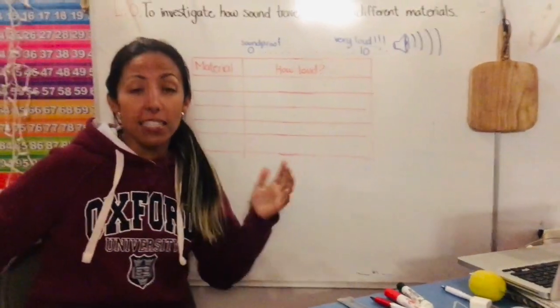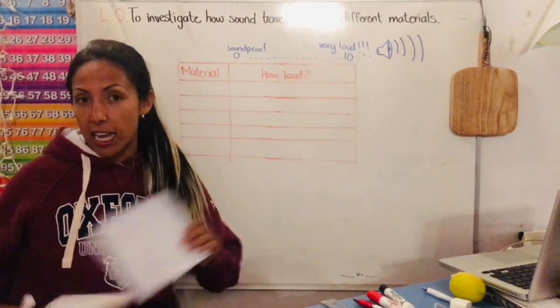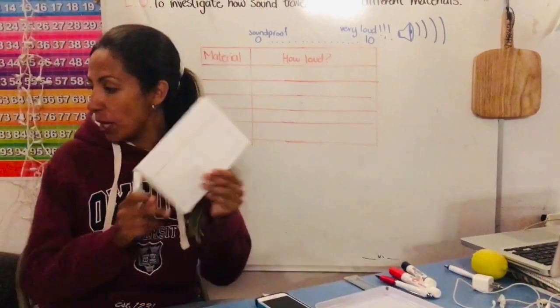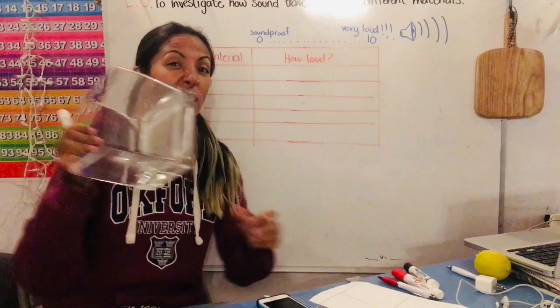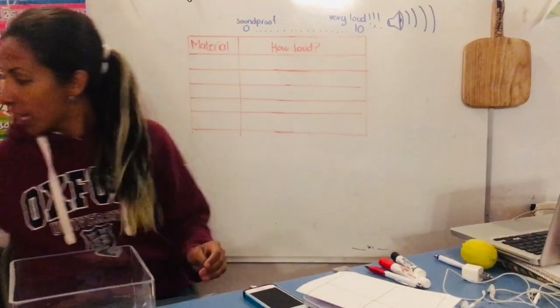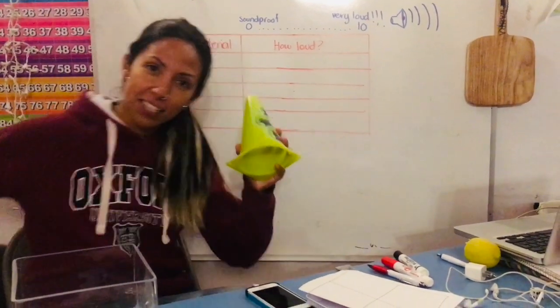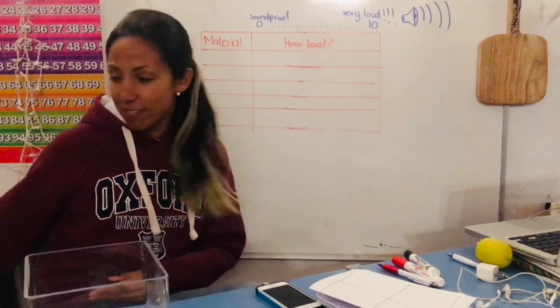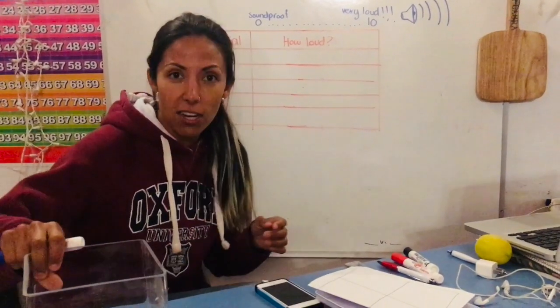Then we're going to need different materials such as metal, maybe some paper, maybe some glass, ask your mother first, plastic, fabric, cardboard or different materials you have at home.